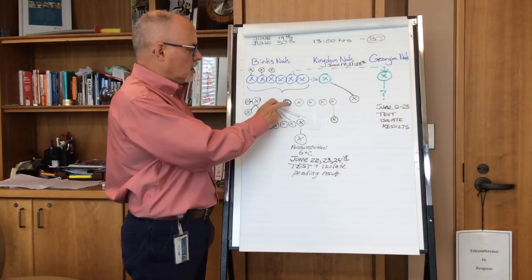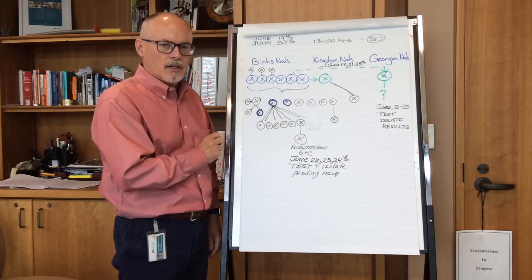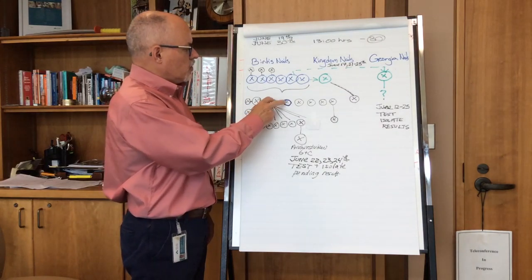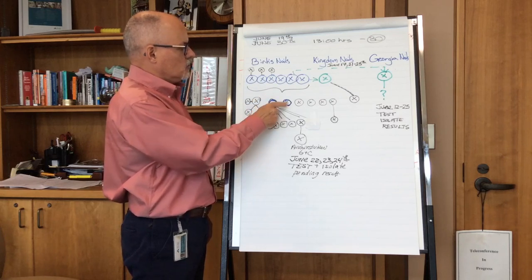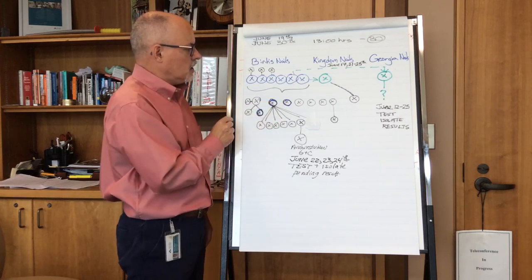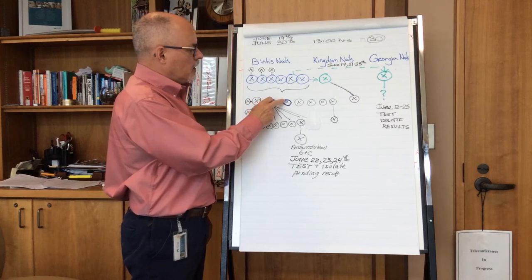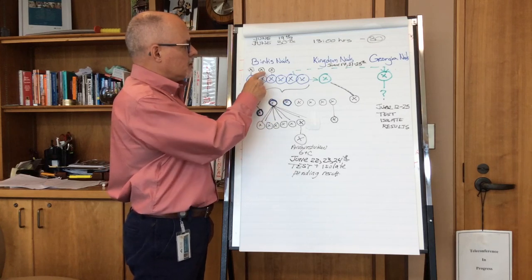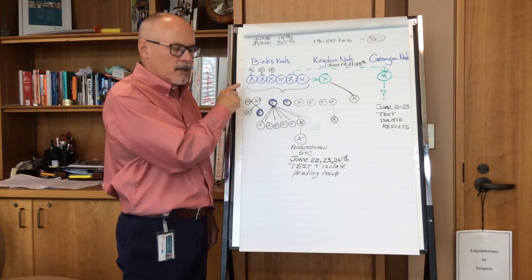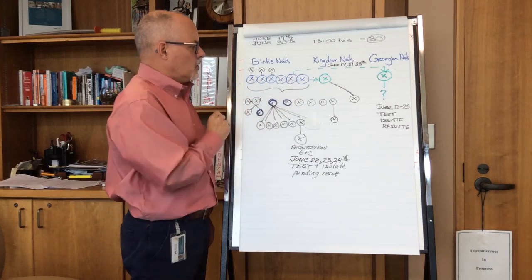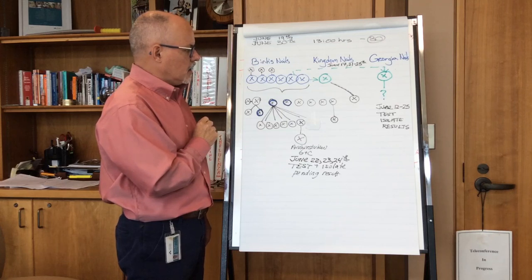we received notification of a couple of members being positive in our community. Our nurse detectors were able to show an association of these individuals, which was just on June 19th where we heard of our first positive. And we were able to show that some of them had visited a Bin's Nail Salon in Kingston. We went in and tested at Bin's Nail Salon where we had six positive workers in that environment.